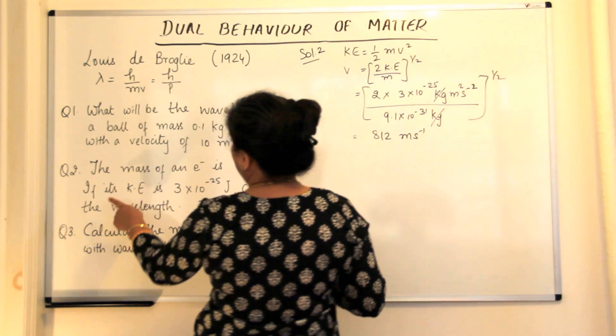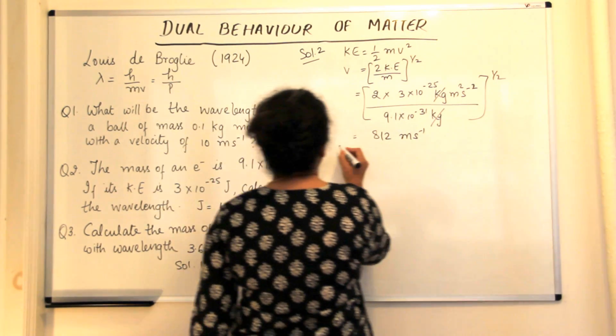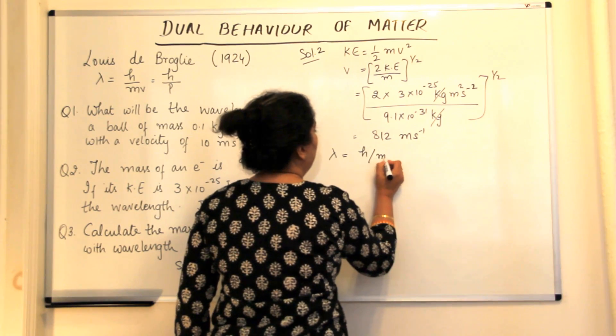812 meters per second would be the velocity. So now we know the velocity and the question is that you have to calculate the wavelength. Lambda is equal to h upon mv.